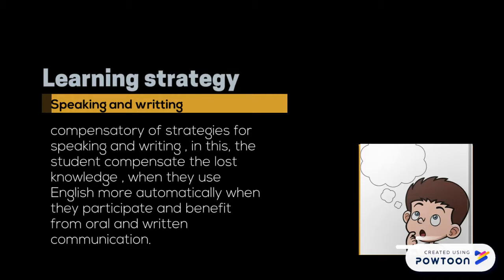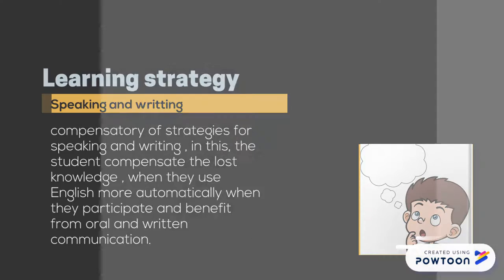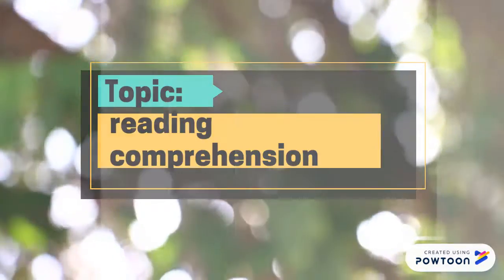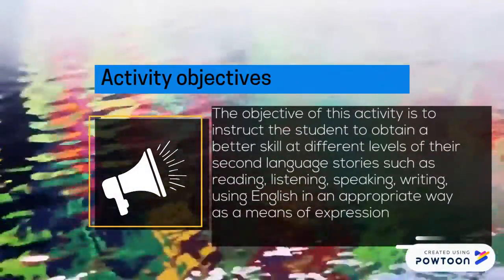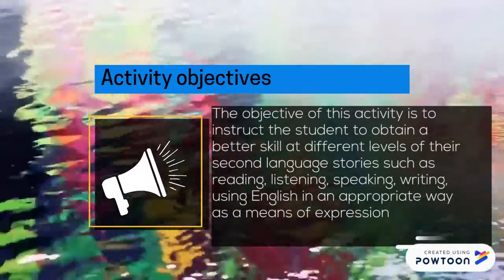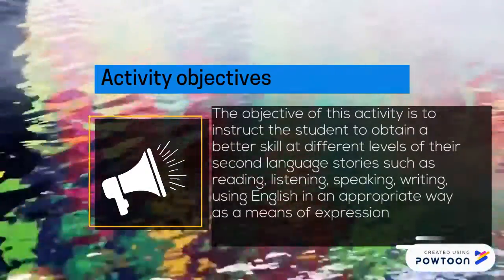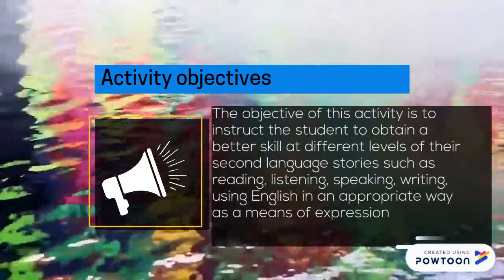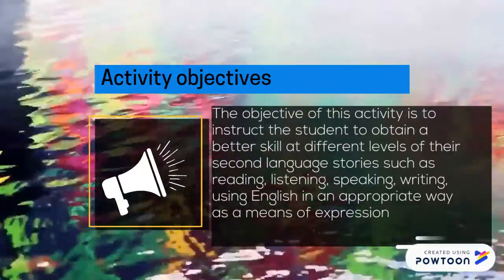In this strategy, the student compensates for lost knowledge when they use English more automatically and when they participate. Reading Comprehension Activity Objectives: The objective of this activity is to instruct the student to obtain better skills at different levels of their second language, including reading, listening, speaking, and writing, using English in appropriate ways as a means of expression.